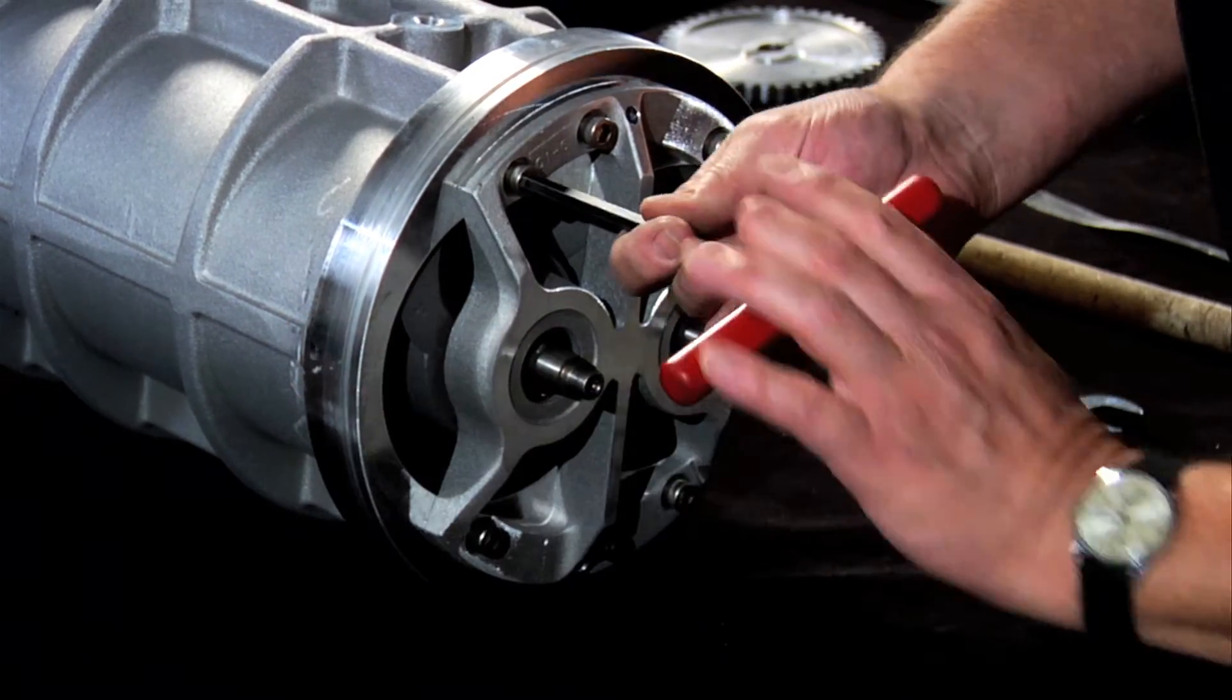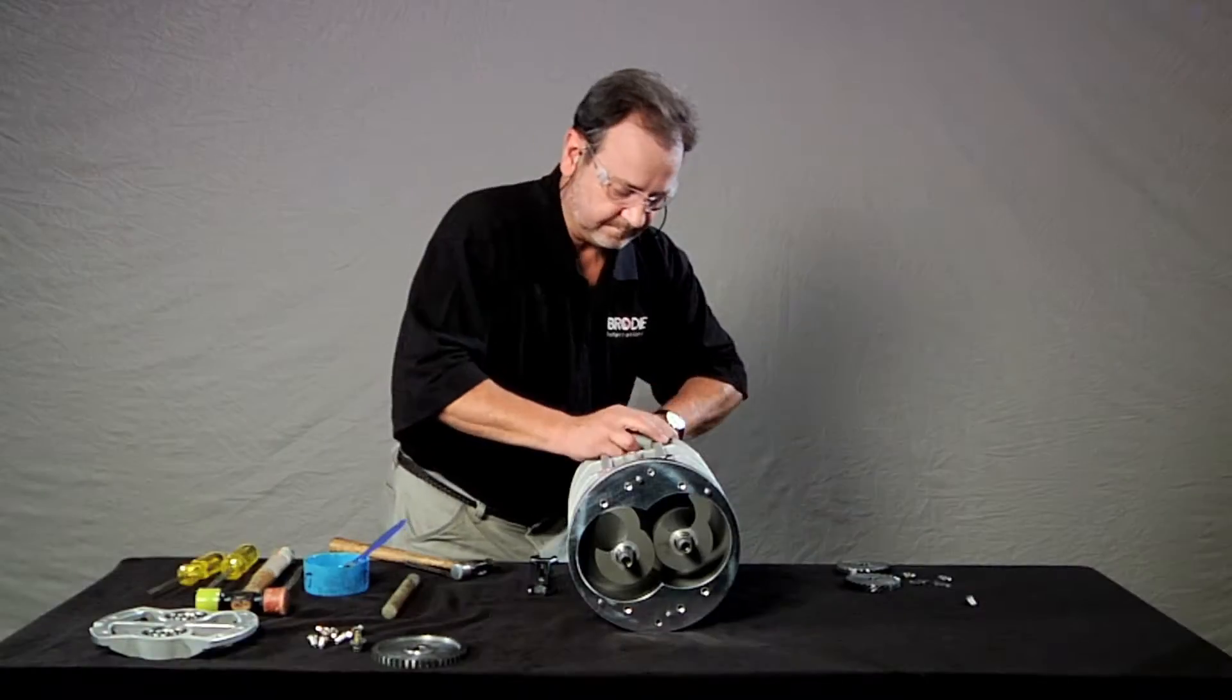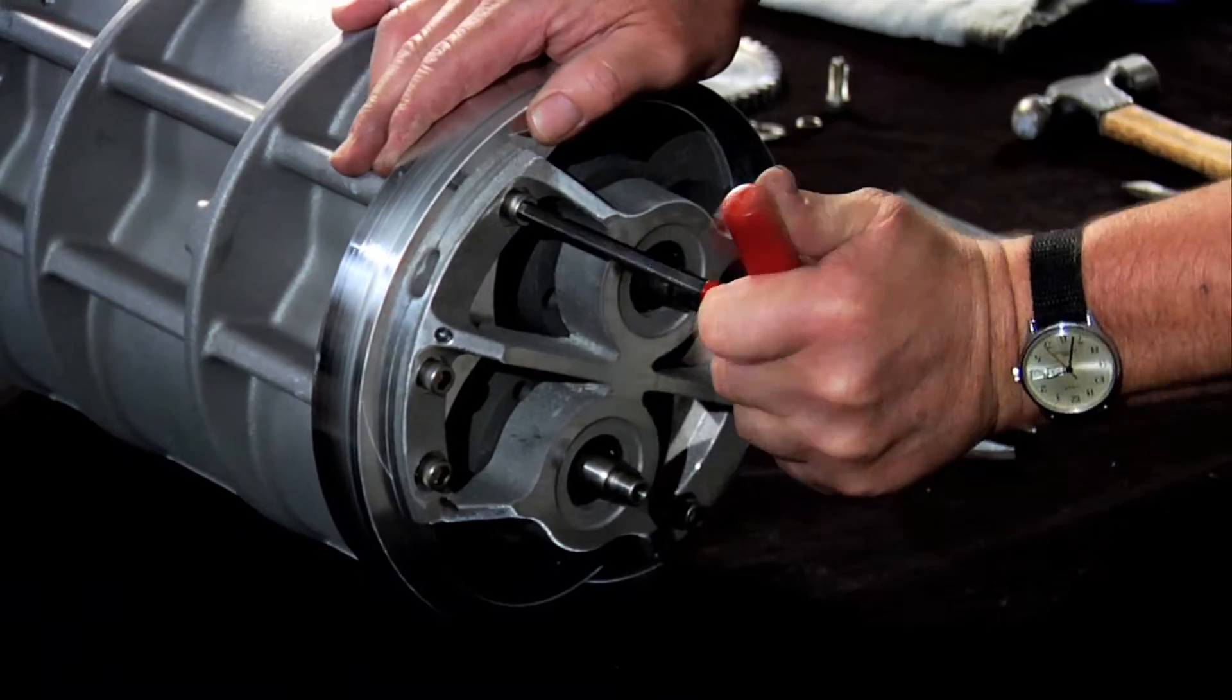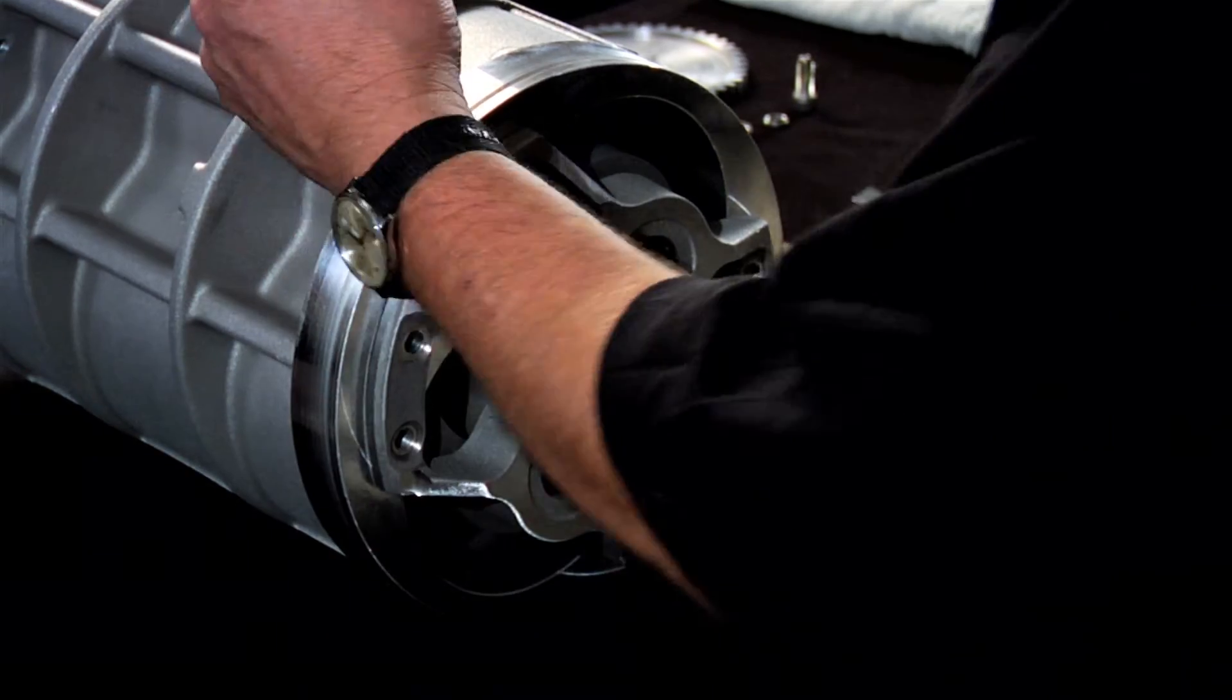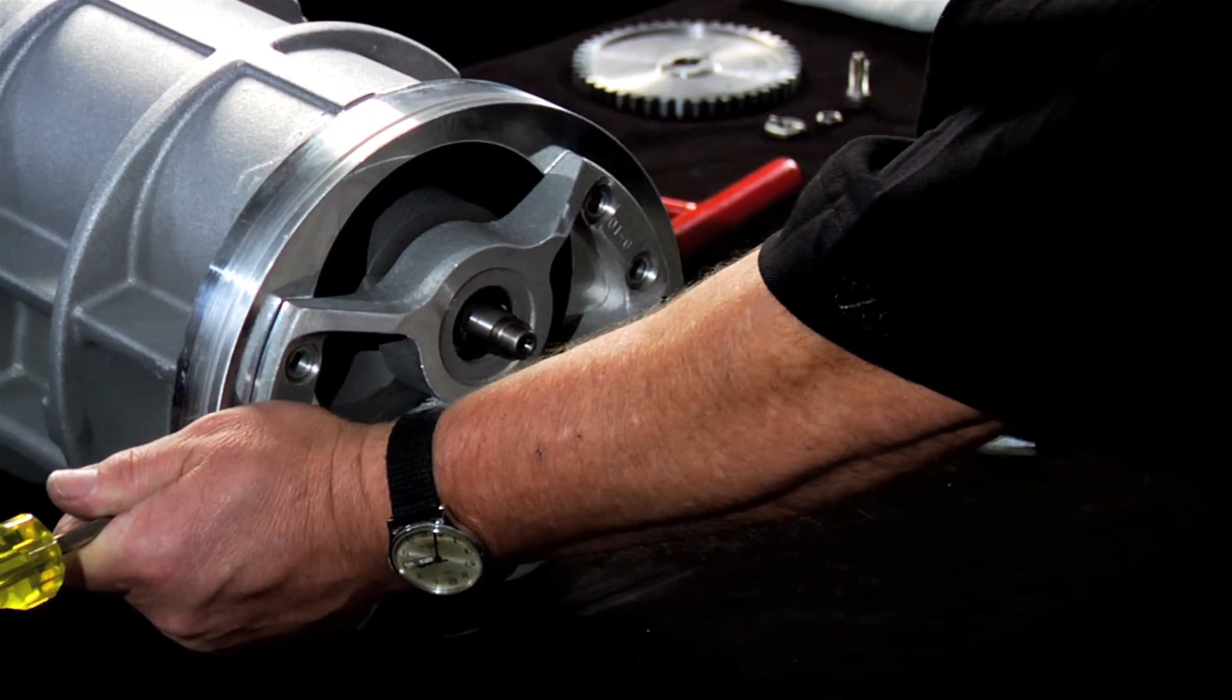Now use the Allen wrench to remove each of the six retaining screws from the end plate. Once the screws are removed, pop the end plate off. Again, use something to pry it loose if needed.